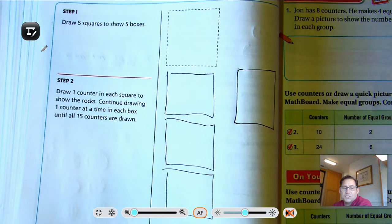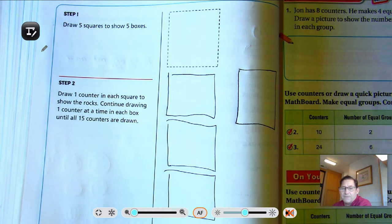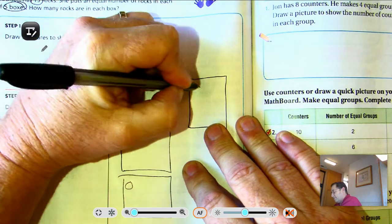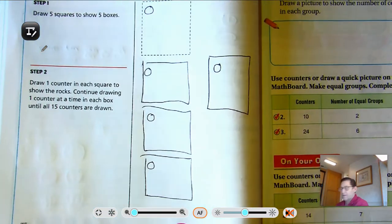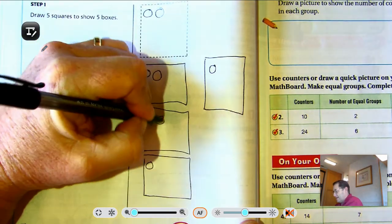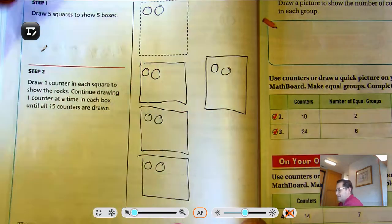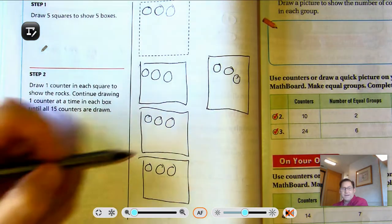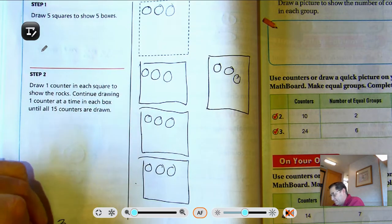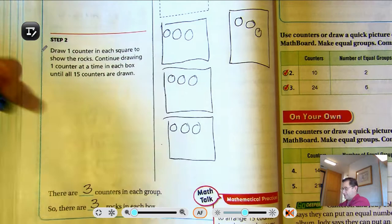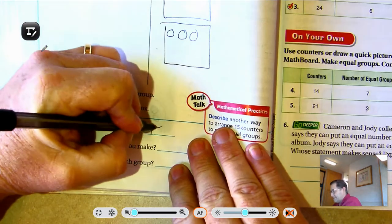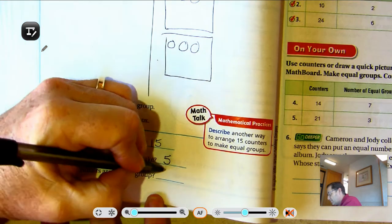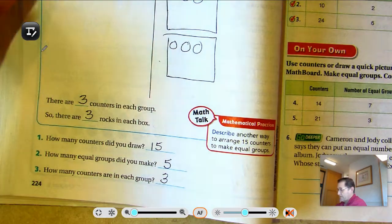All right, so we have five boxes. And we're going to put one counter in each square to show the rocks. And we're going to continue drawing one counter at a time in each box until all 15 counters are drawn. So 1, 2, 3, 4, 5. I haven't got to 15 yet. So I'm going to keep adding: 7, 8, 9, 10. I still haven't got to 15 yet. 11, 12, 13, 14, 15. Okay. So there are how many rocks in each box? 3. So there are 3 rocks in each box. How many counters did you draw? 15. How many equal groups did we make? 5. The boxes were the equal groups. How many counters are in each group? 3.